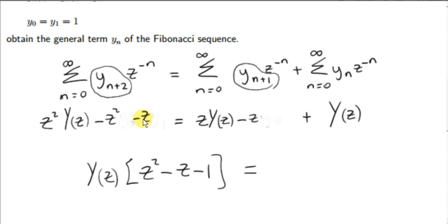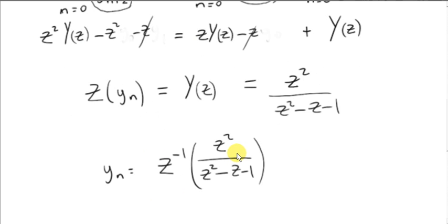We have z squared from the first term. If we bring the next term over, we get minus z. And if we bring plus Y(z) over, we get minus 1. Now we need to shift over the terms not involving Y(z) — minus z squared and minus z have to be shifted over. Actually, some of these cancel out, so we shift minus z squared over. Finally, we divide across by this factor, and that's the z-transform of y sub n. We are after y sub n, so we need to get the inverse z-transform.